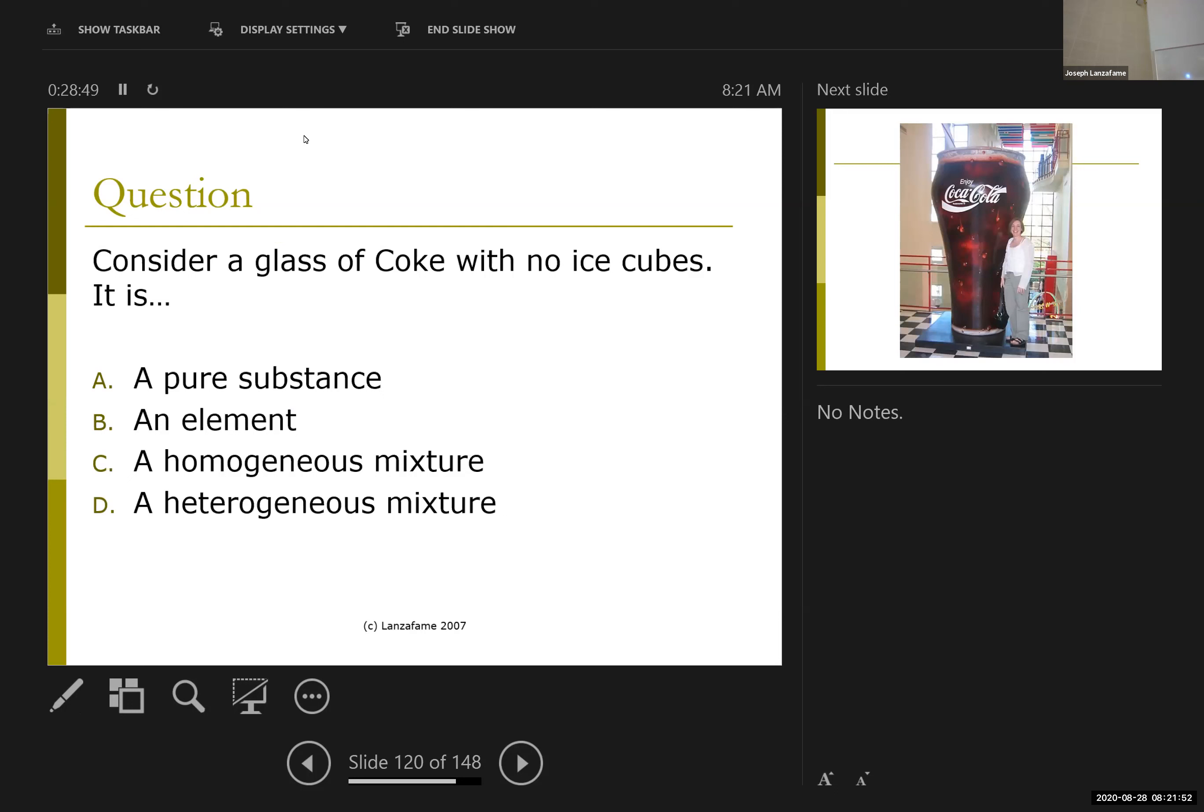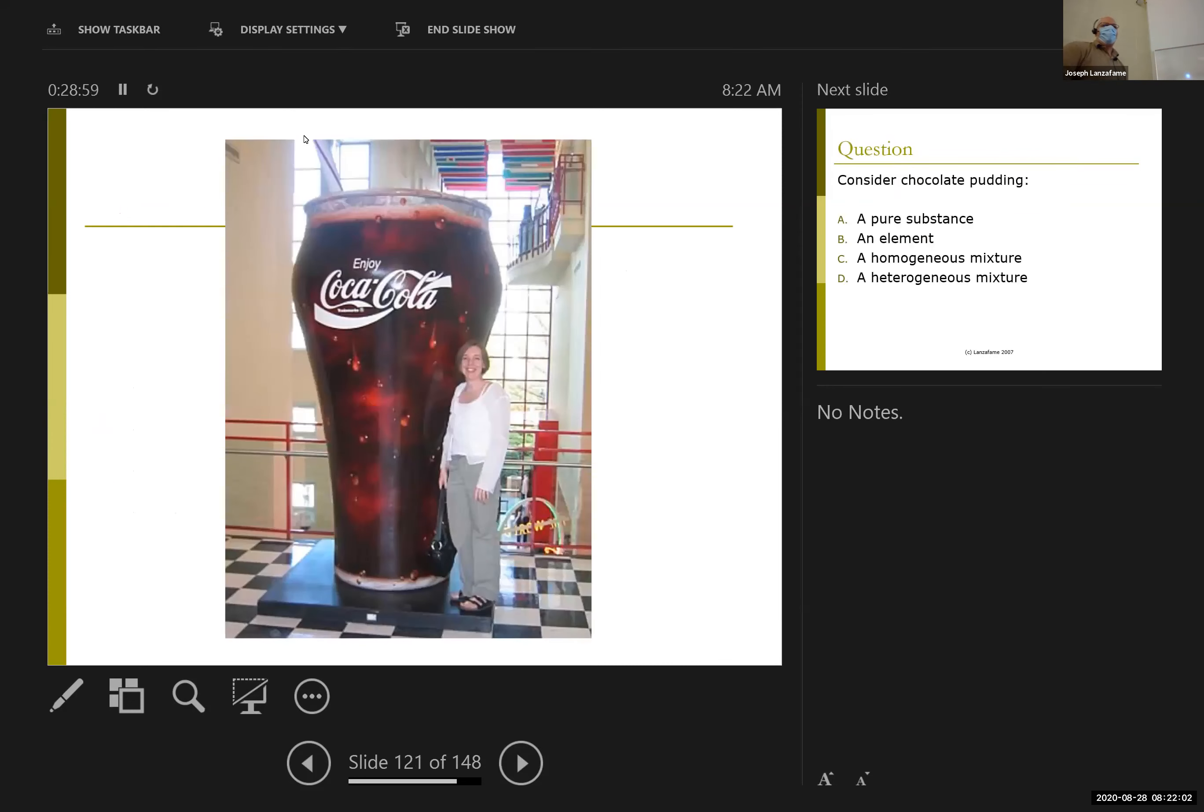Glass of Coke. Pure substance, element, should be an element. No. Pure substance, element, homogeneous mixture, heterogeneous mixture. We could play this game, but no one talks to me. First question is, does it have ice or not? Because my Coke with ice, heterogeneous. I got ice in there, which is distinctly separate phase from the Coke.